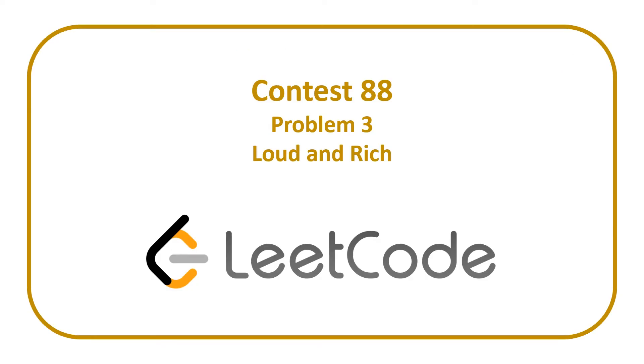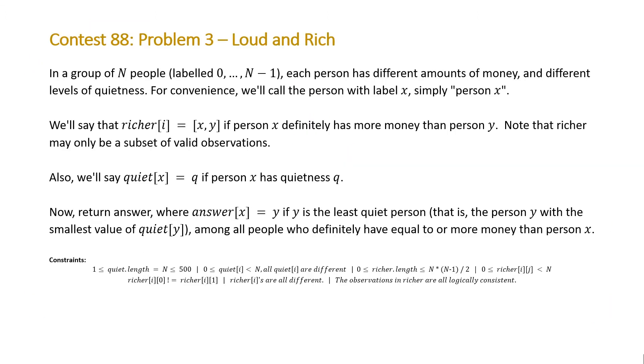In today's video, we'll be covering the third problem from LeetCode Contest 88 entitled Loud and Rich. The problem states: in a group of N people labeled 0 to N-1, each person has different amounts of money and different levels of quietness. For convenience, we'll call the person with label x simply person x. We'll say that the i-th element of the vector richer equals xy if person x definitely has more money than person y.